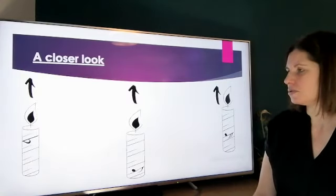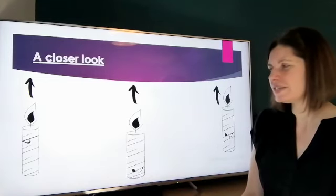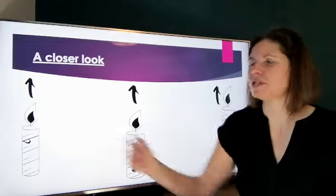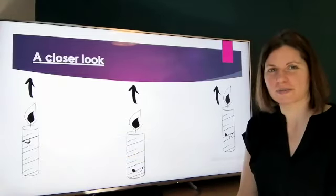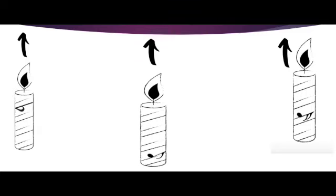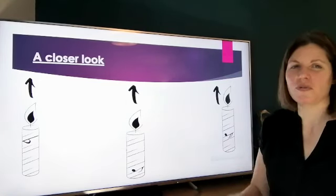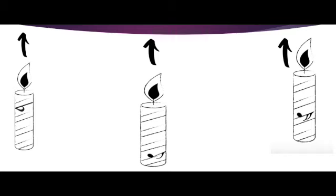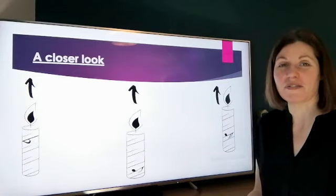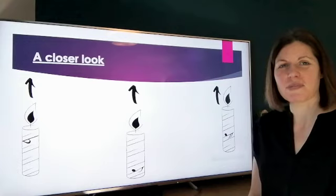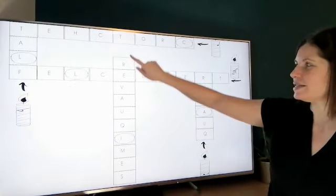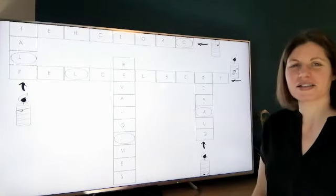Now let's look at the other candles. The first new symbol — this means a flat. It's a type of note; we can flatten a note by putting this symbol in. Then the next one you know — it's a quaver, one quaver all by itself. And finally our semiquaver — we've done four semiquavers together, and that is one semiquaver by itself. These go up in our crossword: flat, then semiquaver, then quaver.